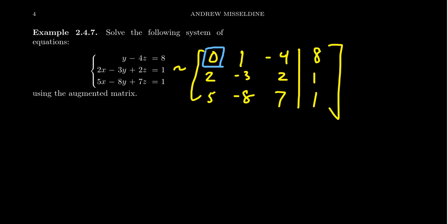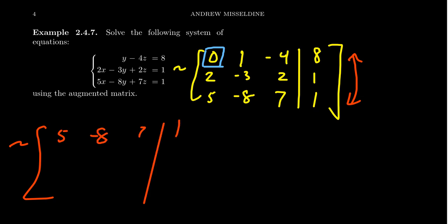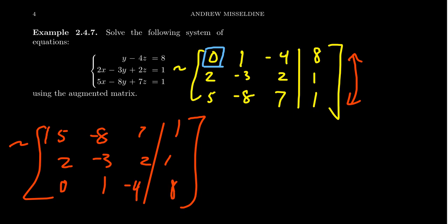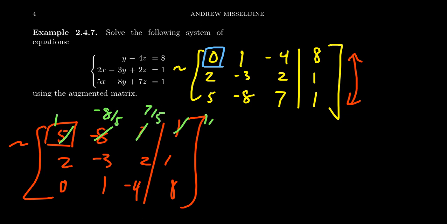Another option is to interchange rows 1 and 3, pulling the 5 up top, giving us 5, negative 8, 7, and 1 in the first row, then 2, negative 3, 2, 1, and then 0, 1, negative 4, 8. But if you divide everything by 5, you get negative 8/5, 7/5, and 1/5 — which honestly made those halves look more promising. So dividing to get a 1 in that position introduces fractions either way.